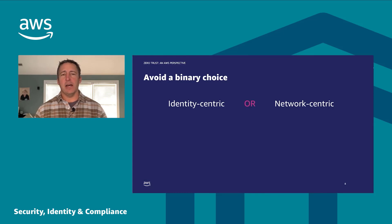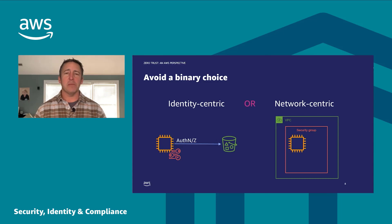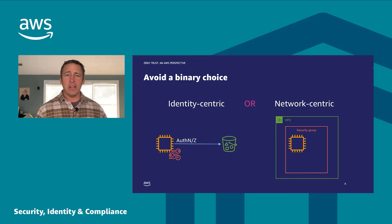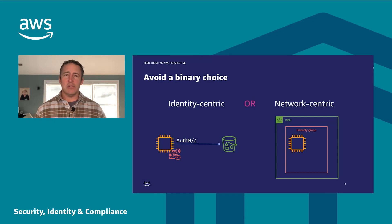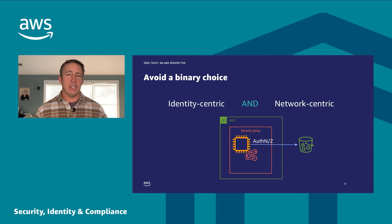The first guiding principle is to avoid the false binary choice between identity-centric and network-centric controls. In academic Zero Trust debates, you'll invariably hear 'the network perimeter is dead, long-live identity-centric perimeters.' While identity-centric controls are super fine-grained — every single request uniquely authenticated and authorized — those network-centric controls provide good outer guardrails. They've been used for a long time, are well-understood, and easy to reason about. Instead of making this an OR, we'd like to suggest this is ideally an AND.